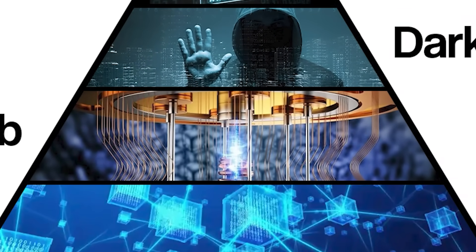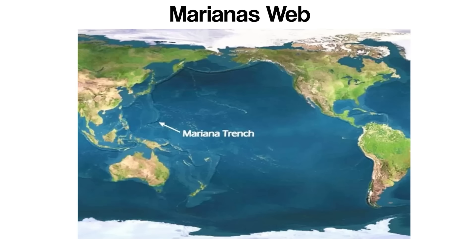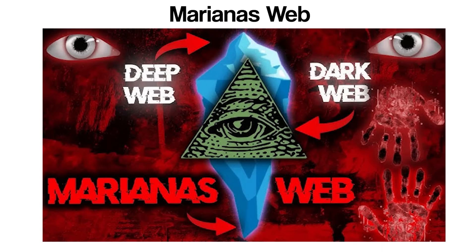The Mariana's Web is a concept that exists more in the realm of Internet mythology. It is often described in online forums, conspiracy theories, and digital folklore as the deepest and most secretive layer of the Internet, far beyond the Surface Web, Deep Web, and even the Dark Web. Named after the Mariana Trench, the deepest part of the world's oceans, the Mariana's Web is portrayed as a hidden digital realm where the most sensitive, powerful, or forbidden information resides. There is no confirmed evidence that the Mariana's Web actually exists in any functional or technical form, and it is widely regarded as a fabricated idea or extreme exaggeration of the lesser-known corners of the web.